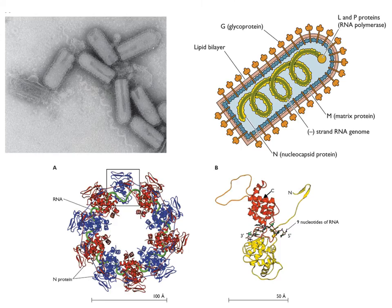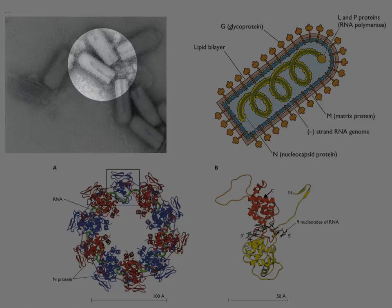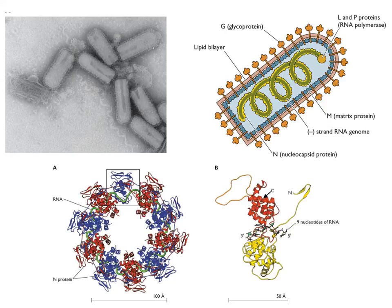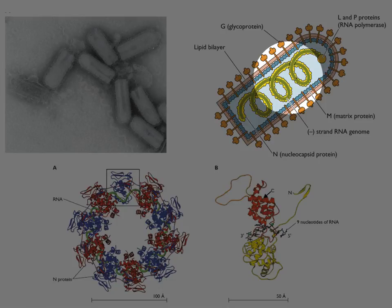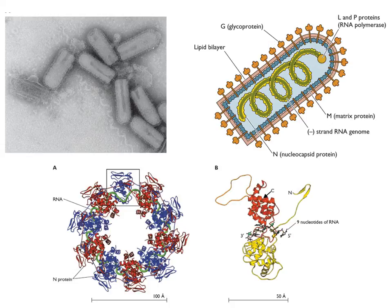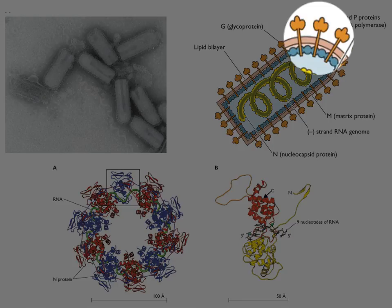Here is a molecular view of the nucleocapsid of vesicular stomatitis virus, related to rabies virus. These are viral RNA complexed with the nucleocapsid protein forming a helical structure — opened up a little bit in this diagram, but it would be very tight in reality. That whole structure is surrounded by an envelope, which is in turn full of glycoproteins.